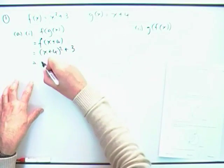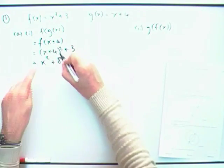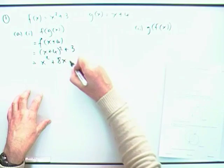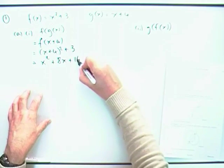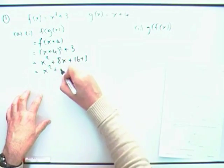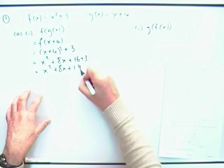Right, sort that out, multiply that bracket. Square the bracket, square the first, twice the product 4x doubled 8x, square the last 4 squared 16, add on 3, and there you are. x squared plus 8x plus 19.